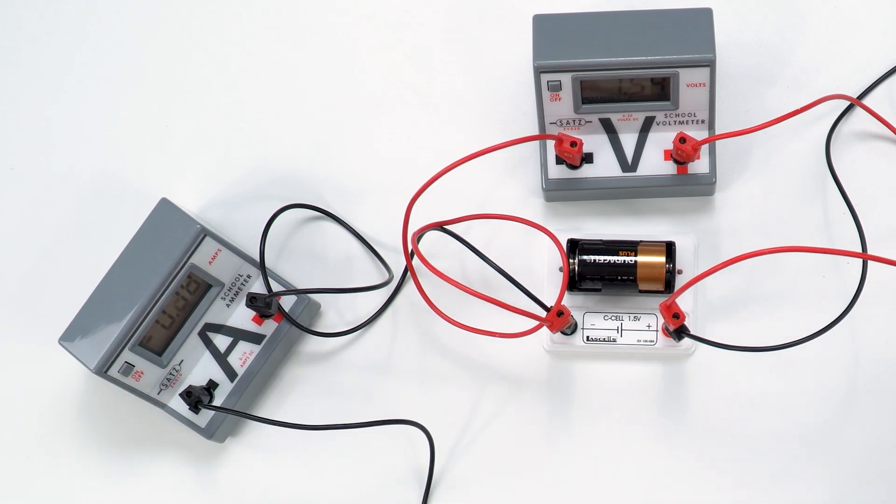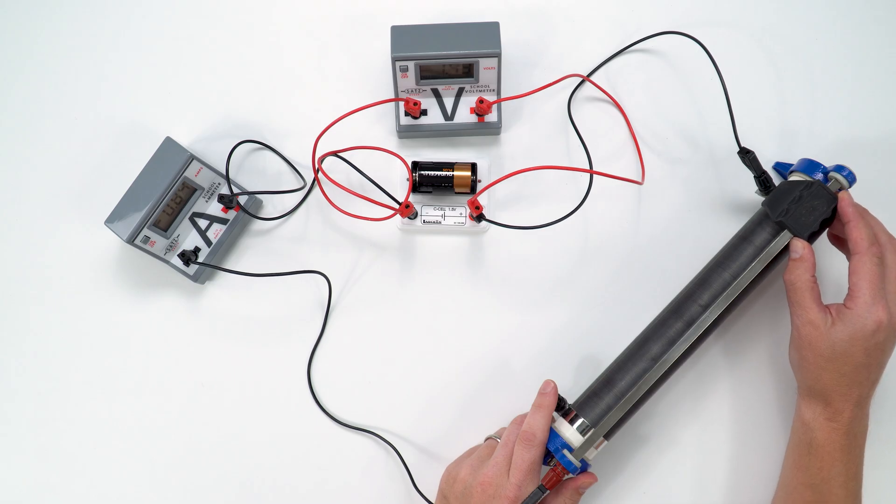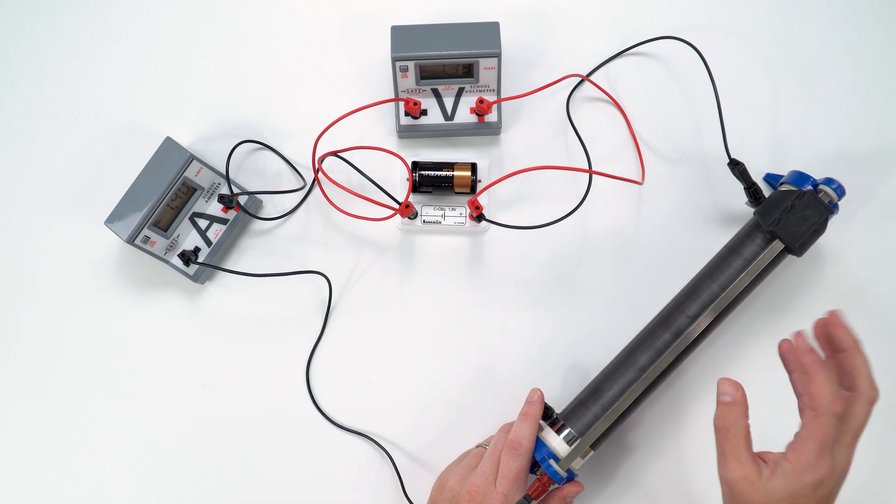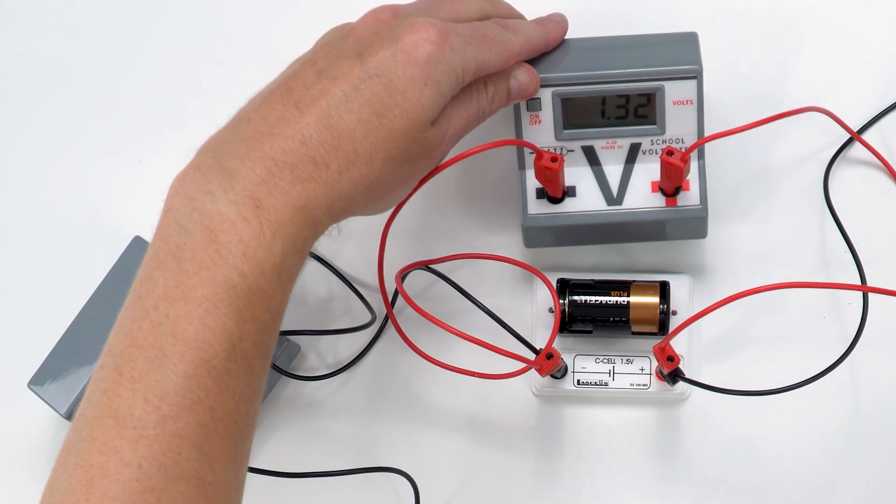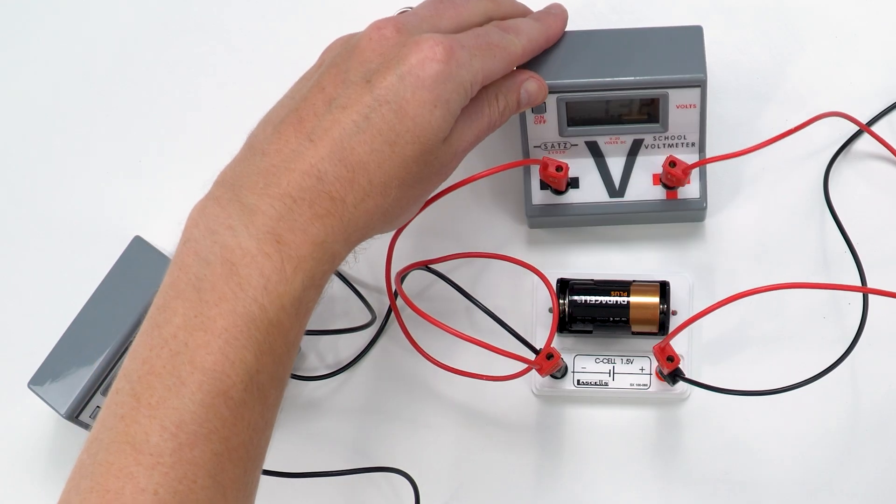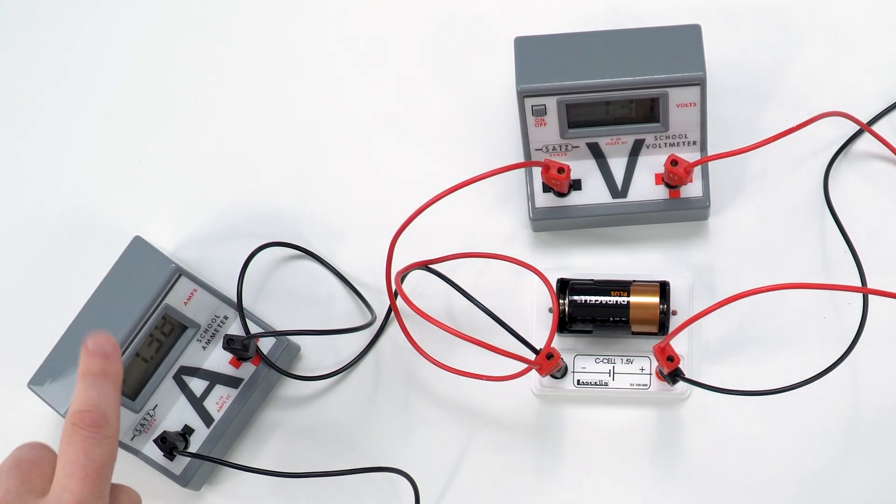that circuit. And I guess if we go to the most extreme case when we've got this with the least value of resistance, the terminal PD in this case is about 1.32 when we've got a current of about 1.33 amps flowing.